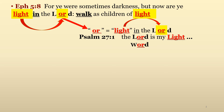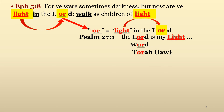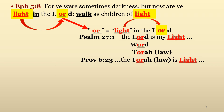Obedience to God's word and His Torah, or law, are essential elements in the process of walking in the light of the Lord. And like the words Lord and Word, Torah also has O-R, or light, in its spelling, identifying it with light. Do you see the pattern? But this should come to no surprise, since Proverbs 6:23 affirms that the Torah, or law, is light.